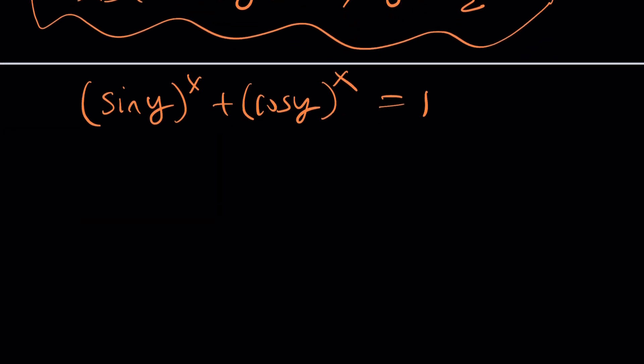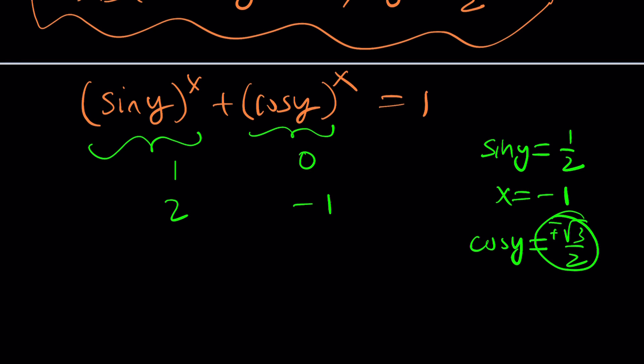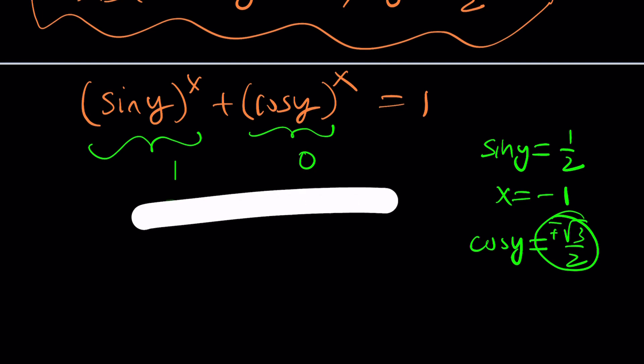So instead, let's do this. Let's look at special cases. For example, to get 1 from sines and cosines, maybe this can be 1 and this can be 0. That makes sense, doesn't it? The problem is, can it not be bigger? Like, for example, maybe this is going to be 2 and this is going to be -1. Here's the problem. Sine y cannot exceed 1. So is it possible that it can exceed 2 when you raise it to the power of x? That's a good question. If sin y = 1/2 and x = -1, then yes, that is exactly going to happen. But when sine is 1/2, cosine y is going to be ±√3/2, and x is -1. So when you raise it to the power of -1 and add it to this, it's not going to work. So they kind of have to work together.